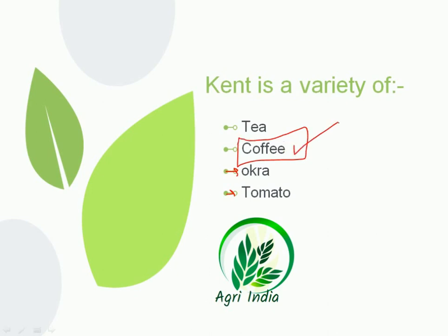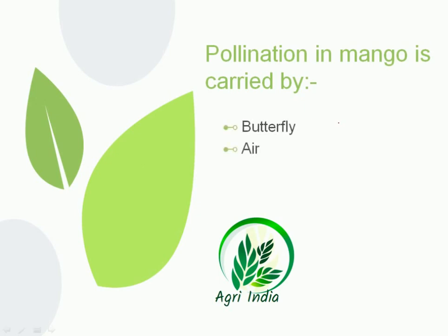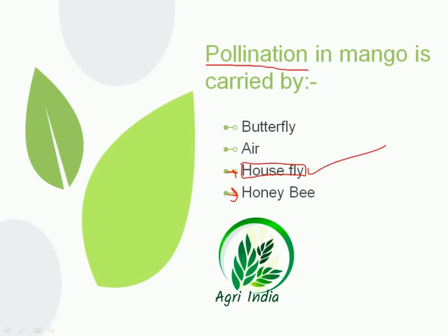Next question: pollination in mango is carried out by — options are butterfly, house fly, and honey bee. Honey bee carries out pollination in onion, while house fly mainly carries out pollination in mango. The correct option is house fly. Pollination is the transfer of pollen from the anther to the stigma.